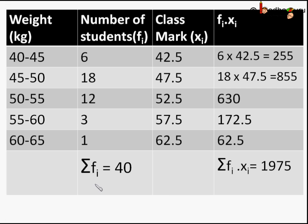So now we can use this formula: sum of fixi divided by sum of fi, where i varies from 1 to n. As there are 5 classes here, or 5 rows here, n equals 5 in this example.